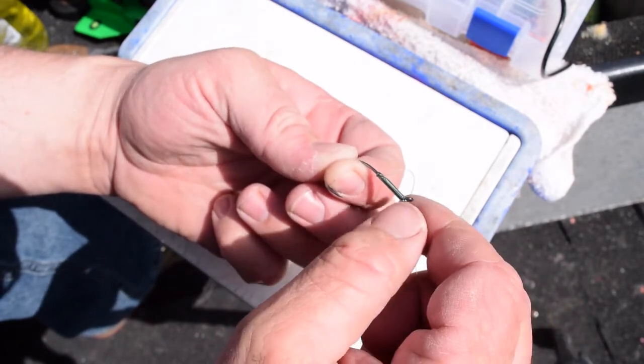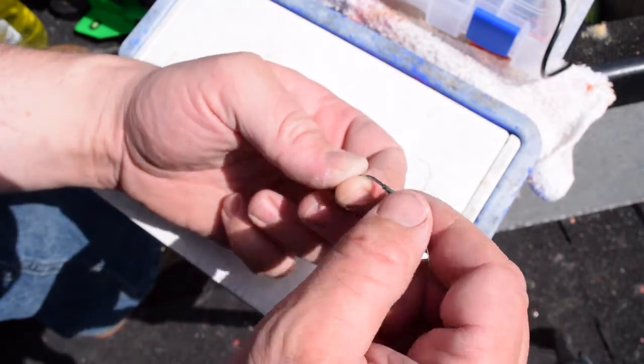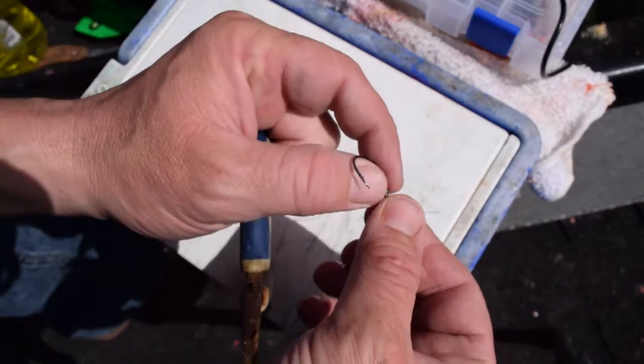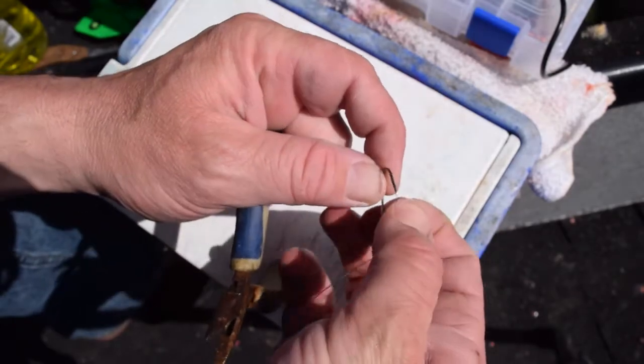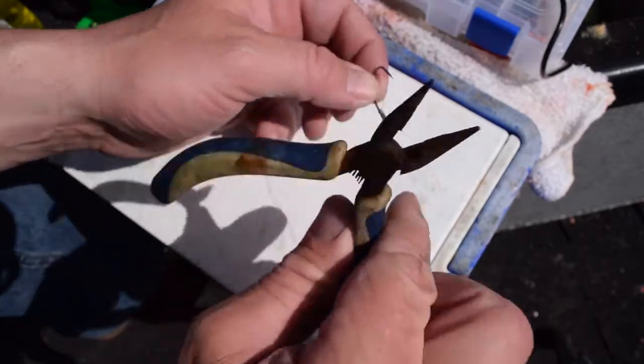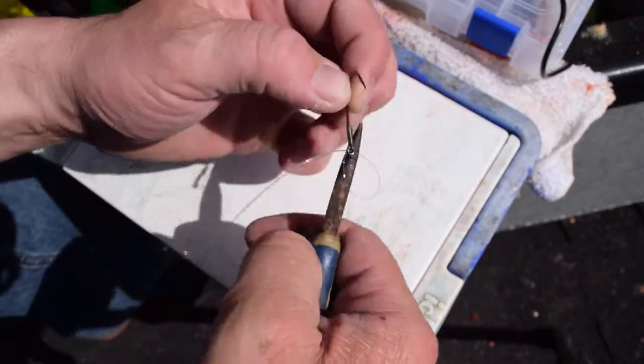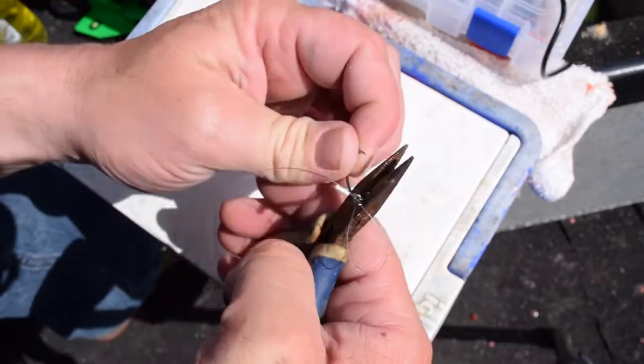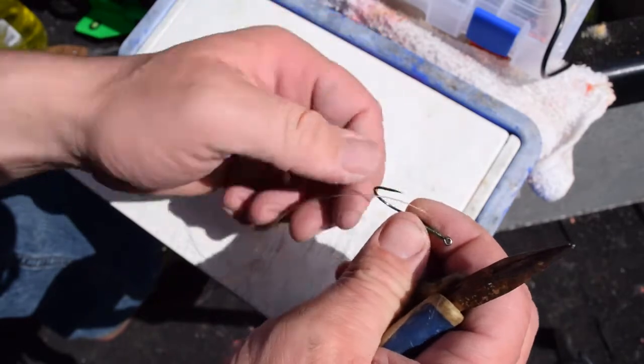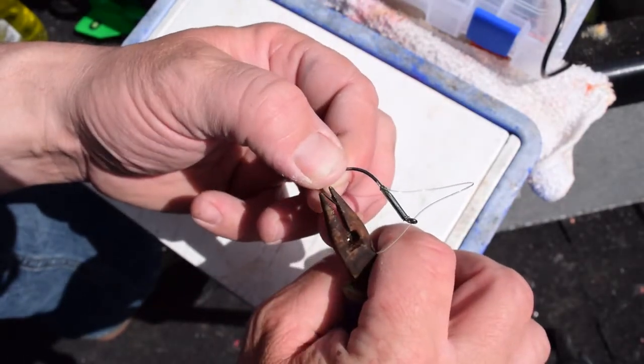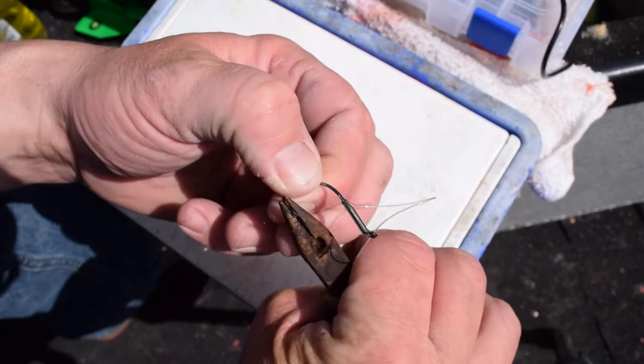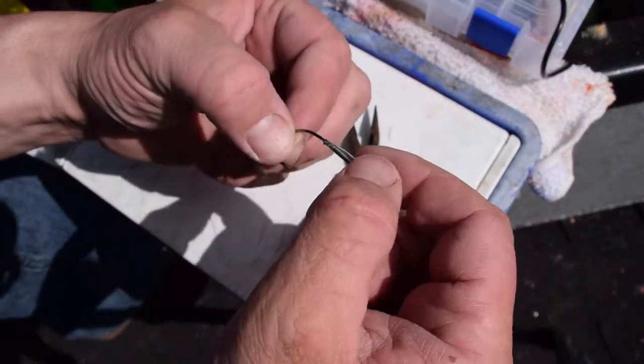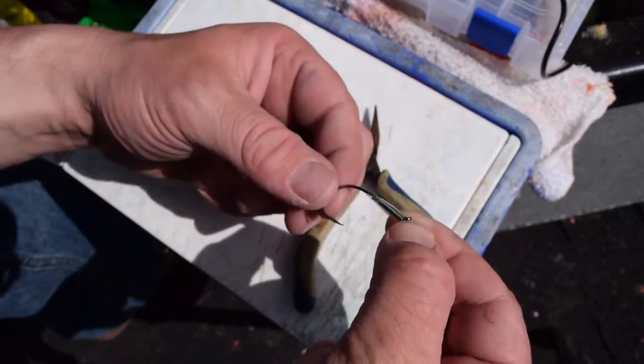And then there you have the loop. Take your pliers or your snips, take the tag end off. Smash your barb if you're on the Willamette, the Columbia. And now you're ready to fish. There's your egg loop.